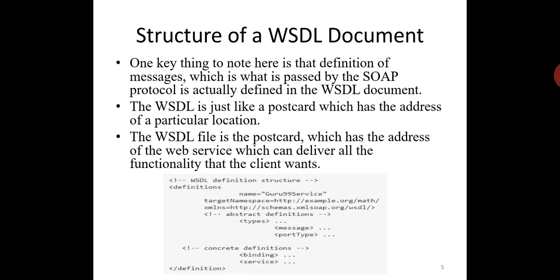The general structure of a WSDL file consists of: definition, target namespace, data types, messages, port type, bindings, and service.